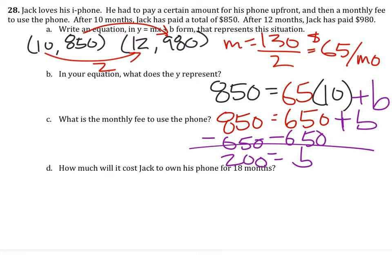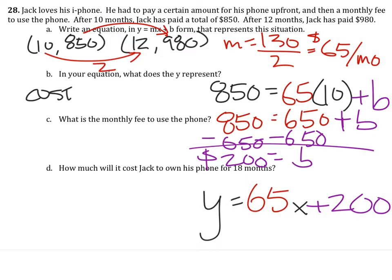So in other words, it was $200 to start with. Finally, we can write the equation of this thing, y equals $65x plus $200. So what does the y represent? Y represents the cost after x months.